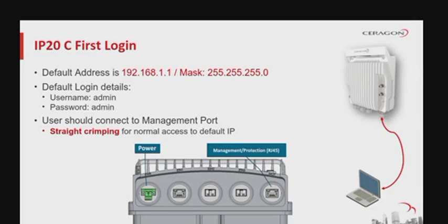Each IP20C network element comes from the factory with the following defaults: the default IP address is 192.168.1.1, and the default username and password are both 'admin'. Users connect to the element using a computer connected via Ethernet cable to the management port, which is the port furthest away from the power port. The cable used is a straight-crimped cable with RJ45 plugs on each end. Your computer must be in the same subnet as the network element to access it through this IP.